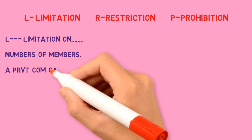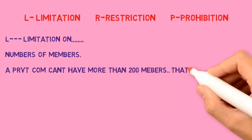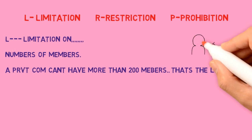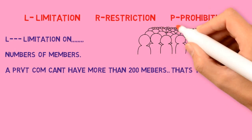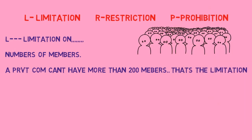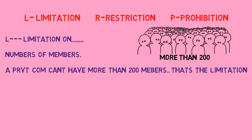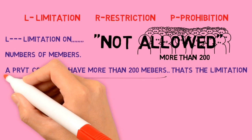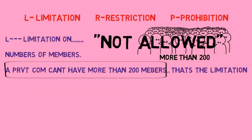L stands for Limitation — limitation on the number of members. A private company cannot have more than 200 members. For example, if XYZ Private Limited has allotted its shares to members and these members are more than 200, this is not allowed. A private company cannot have more than 200 members.